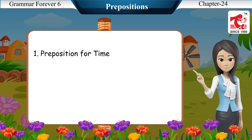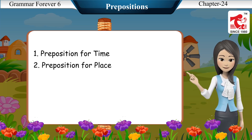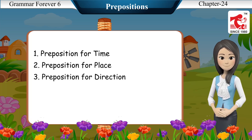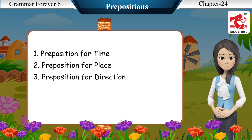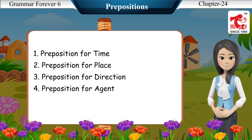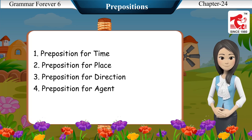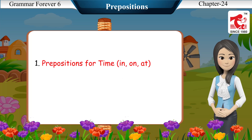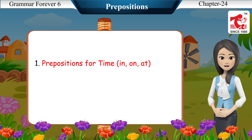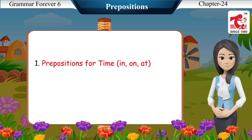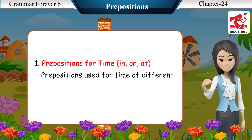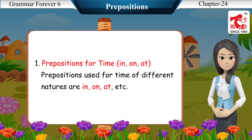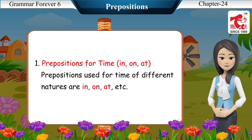Prepositions are categorized as: preposition for time, preposition for place, preposition for direction, preposition for agent, and preposition for instrument. Prepositions for time — in, on, at — are used for time of different natures.